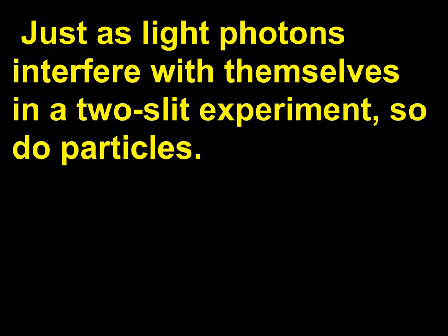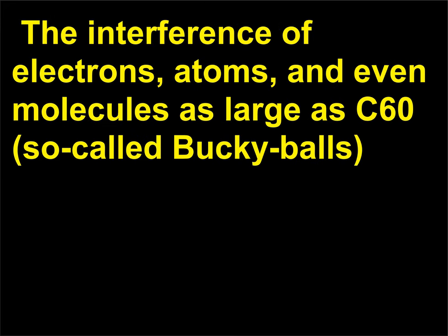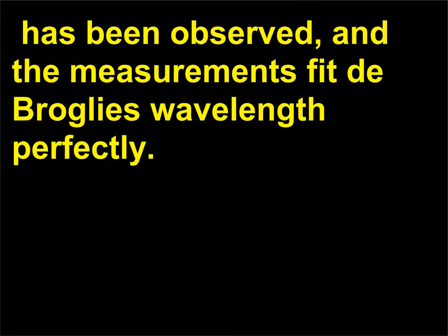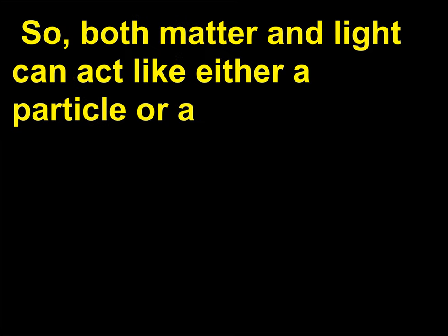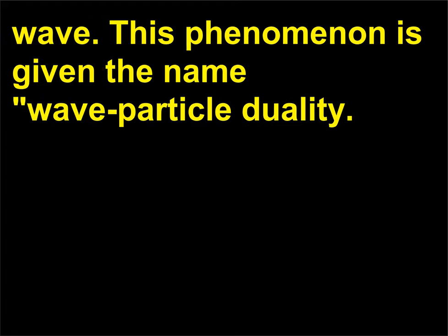The de Broglie wavelength of a particle determines its wave-like properties. Just as light photons interfere with themselves in a two-slit experiment, so do particles. The interference of electrons, atoms and even molecules as large as C60, so called buckyballs, has been observed, and the measurements fit de Broglie's wavelength perfectly. So both matter and light can act like either a particle or a wave. This phenomenon is given the name wave-particle duality.